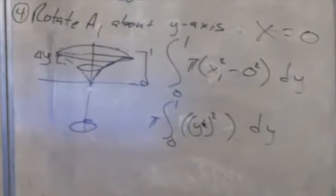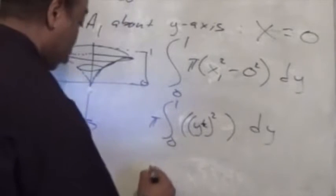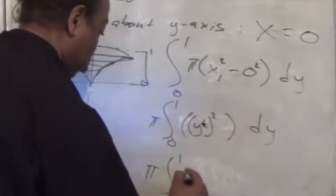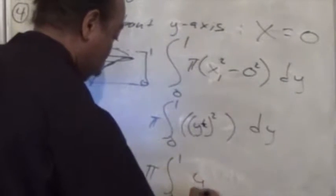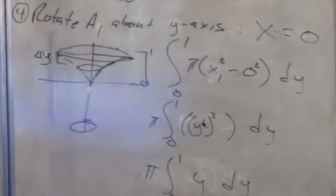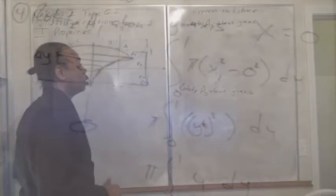So y to the one-half power squared will be y. We'll take the antiderivative of that and we get the volume of that solid.